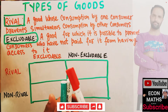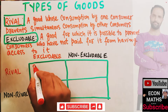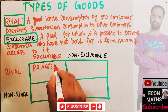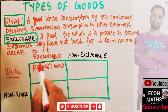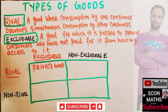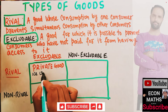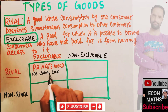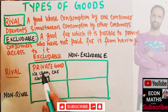A good which is rival and excludable we call a private good. A private good is one which is rival and excludable. Examples of private goods include ice cream, cars, and clothing.